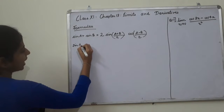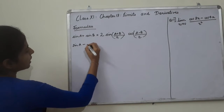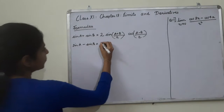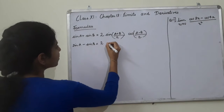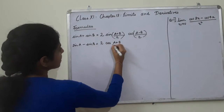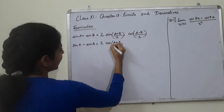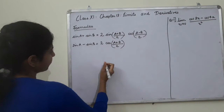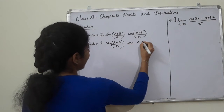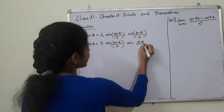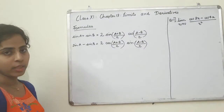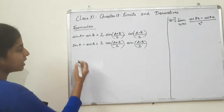The second formula: sin A minus sin B is equal to 2 cos((A plus B)/2) sin((A minus B)/2). This is another pillar formula.